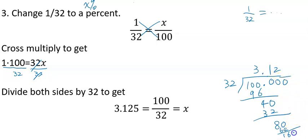We add one more 0 and bring it down. 32 goes into 160 exactly 5 times, giving us remainder 0.